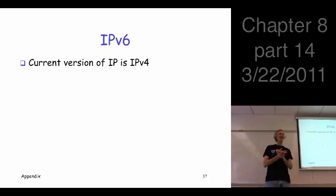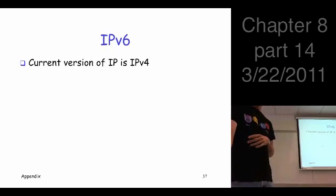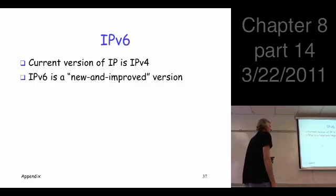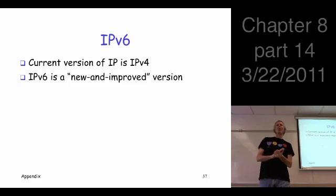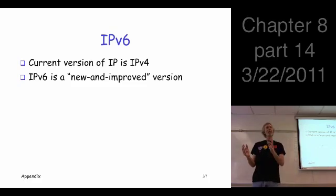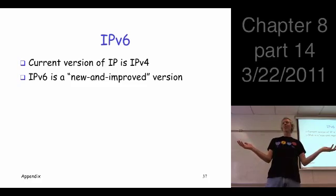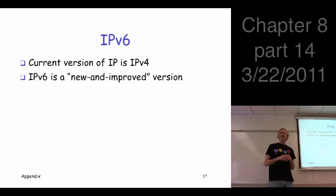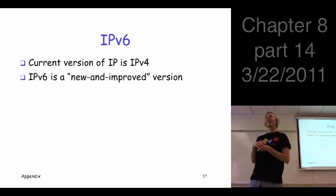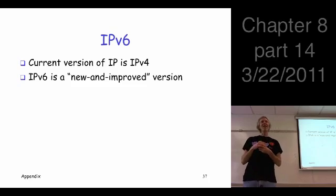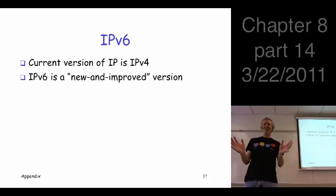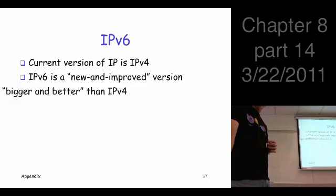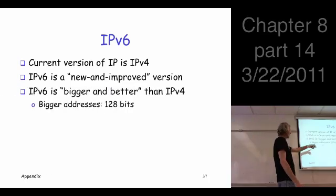What is IP version 5? There's a history of it on the internet. IP version 6 is new and improved. What's wrong with IP version 4? The IP addresses are too small. Whoever invented this thought 4 billion addresses — there will never be 4 billion computers in the whole history of the world. Well, that was short-sighted. So we need more addresses. IP version 6 has 128-bit addresses, so 2 to the 128. We're never going to run out of IP addresses with version 6.